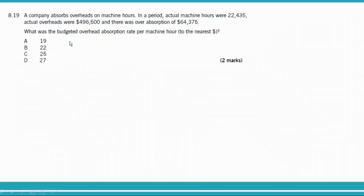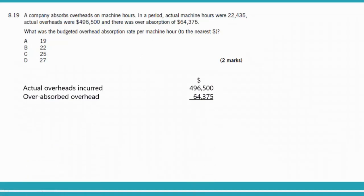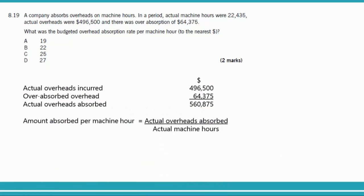Actual overheads are $496,000 and over absorbed overheads are $64,000 (approximately), so actual overheads absorbed equal $560,000. The amount absorbed per machine hour equals actual overhead absorbed ($560,875) divided by actual machine hours (22,435), giving $25 per machine hour. This is the budgeted overhead absorption rate per machine hour.